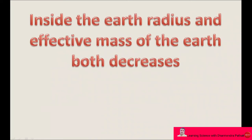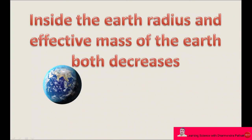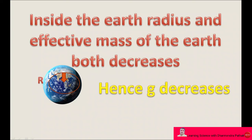Inside the earth, the radius and effective mass of the earth both decrease. Inside the earth, the radius becomes smaller, and the effective mass of the earth which produces acceleration due to gravity is also small. Hence, acceleration due to gravity inside the earth decreases. We find that on the surface of the earth, acceleration due to gravity is maximum. When height from the surface increases, or as we go down inside the earth, in both conditions, acceleration due to gravity decreases.